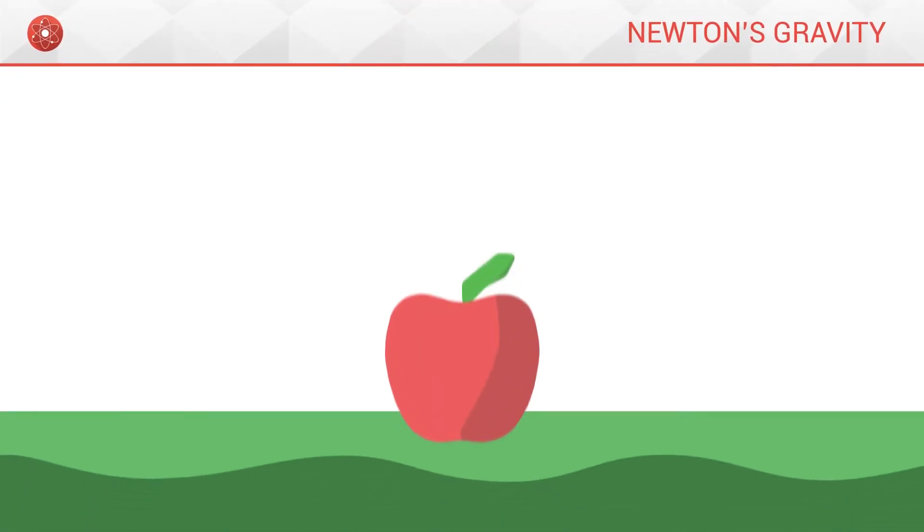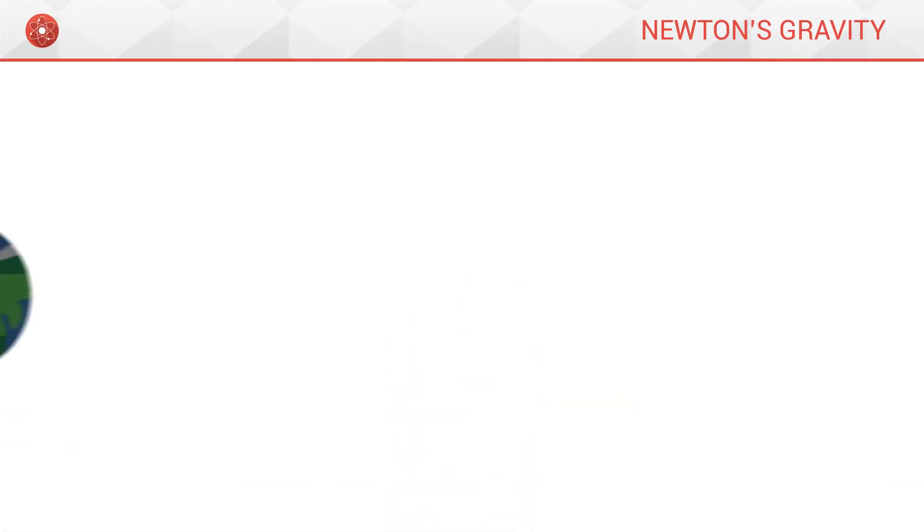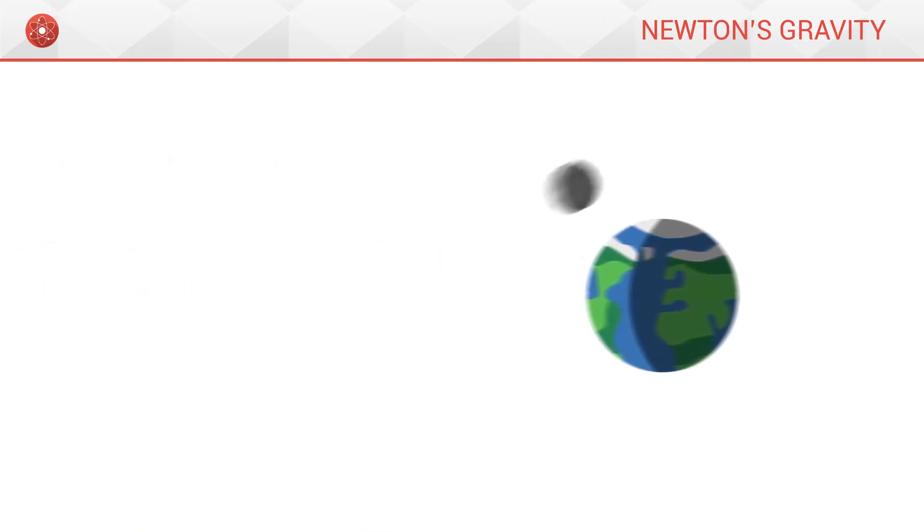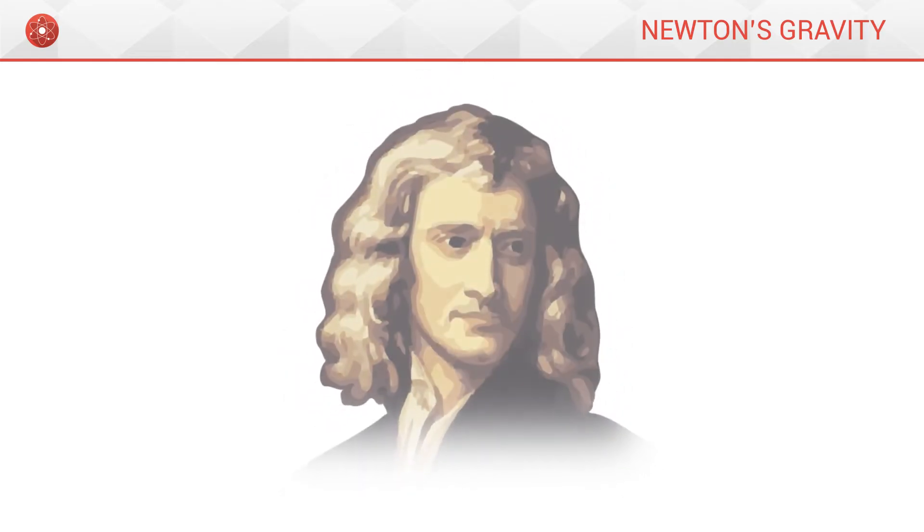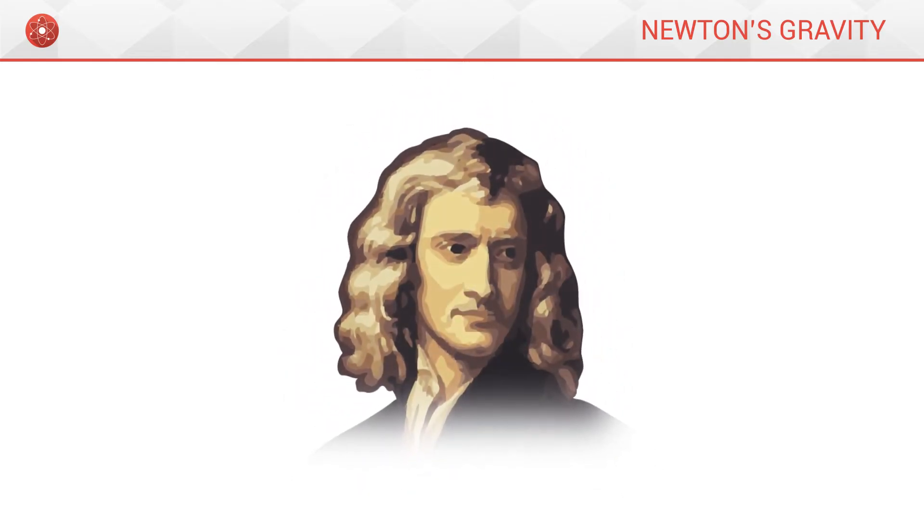Why does an apple fall from a tree towards the ground? And why does the moon orbit around the Earth? In the 17th century, mathematician and physicist Isaac Newton answers these two questions with a single answer.